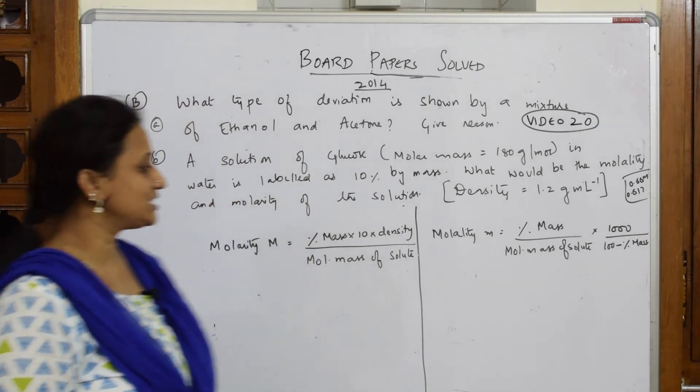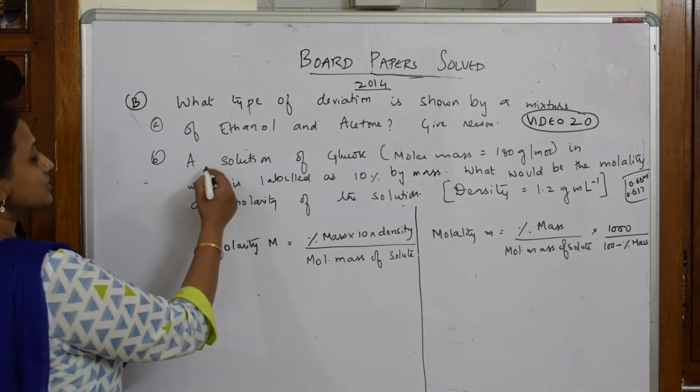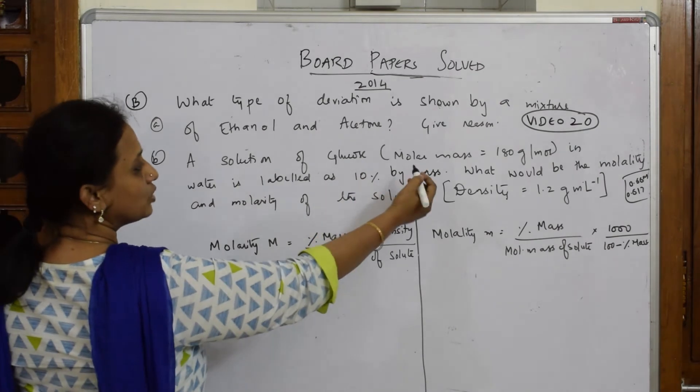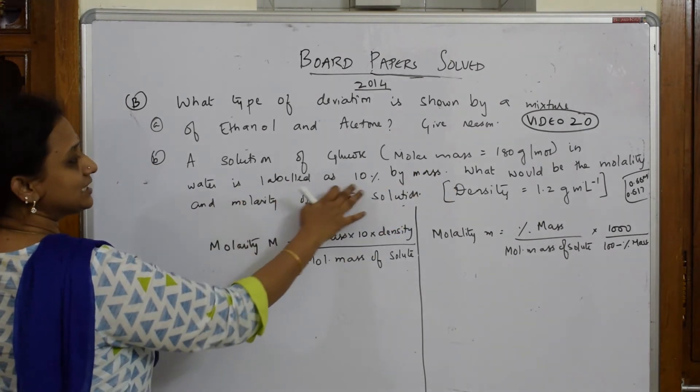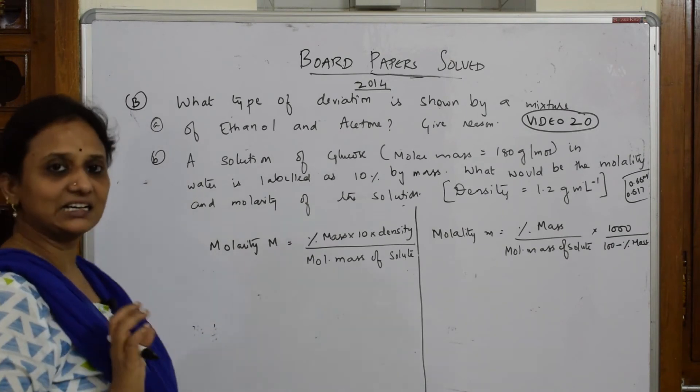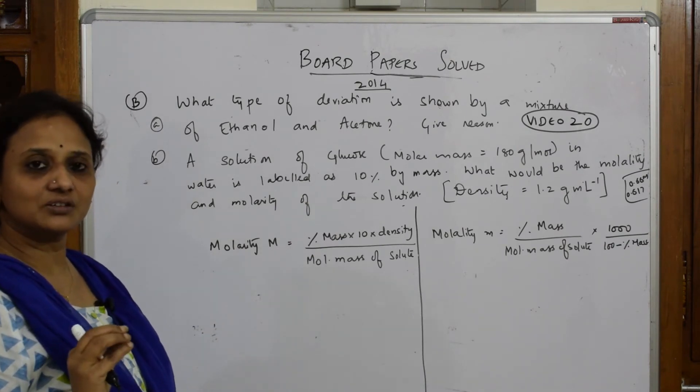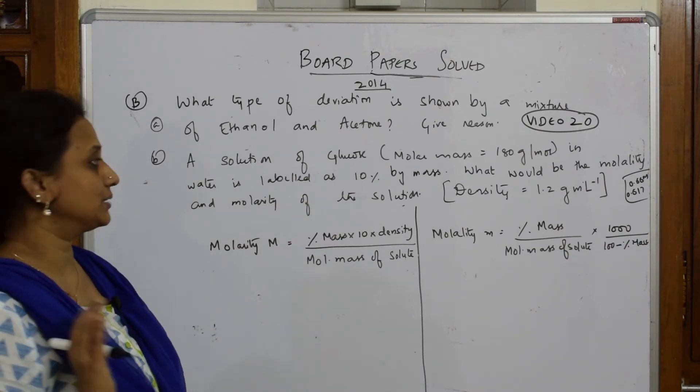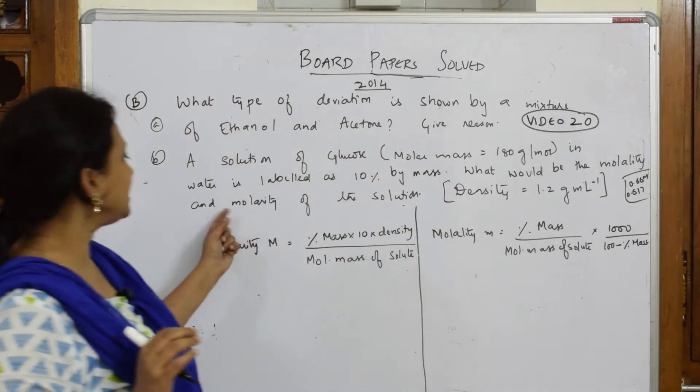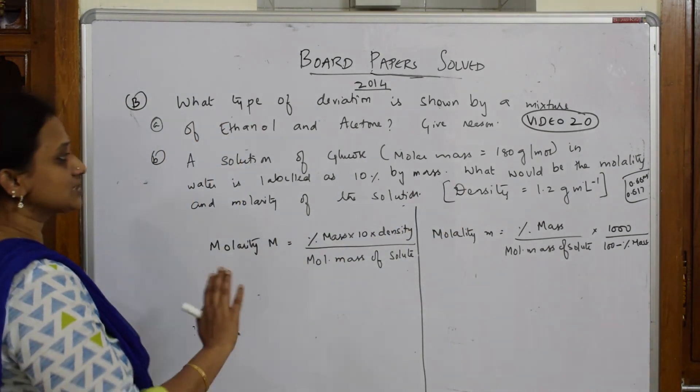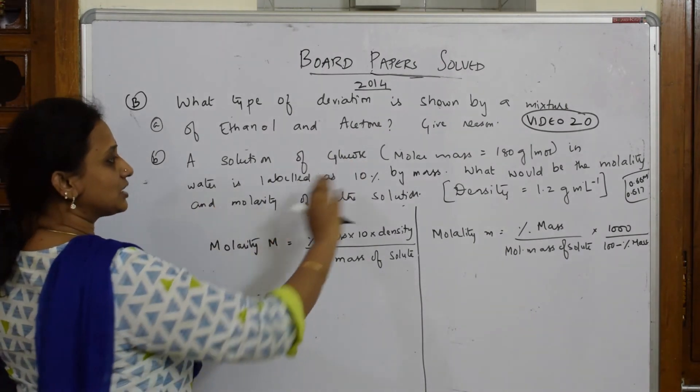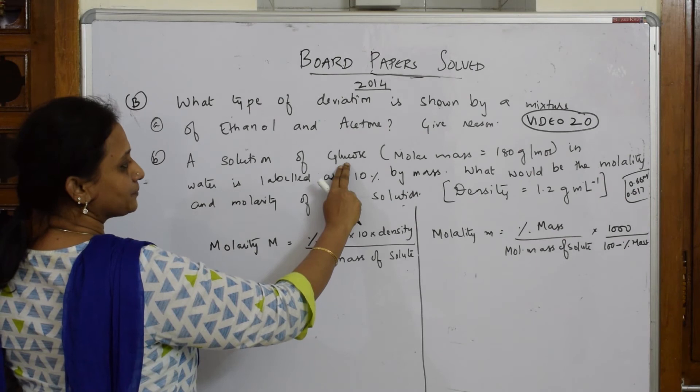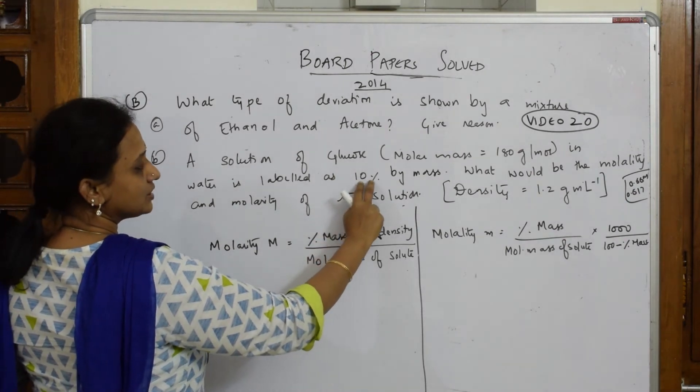Now in this question, a solution of glucose, molar mass 180 grams, in water is labeled as 10% by mass. That means 10 grams solute and 90 grams solvent. What would be the molality and molarity of the solution? Nothing is given, only thing is glucose is given to us, glucose solution. So that means the solute is 10 grams which is dissolved in a solution which is 90 grams.